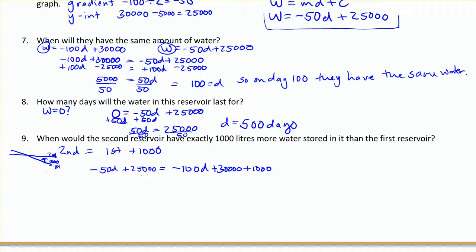So let's do some simplification and solve for this. That's negative 50 d plus 25,000 is equal to negative 100 d plus 31,000. I'll go ahead and add 100 d to both sides, and I'll minus the 25,000 from both sides. So I get 50 d is equal to 6,000, 31 minus 25. Next thing I'll do is divide by the 50. So we get d is equal to 120.